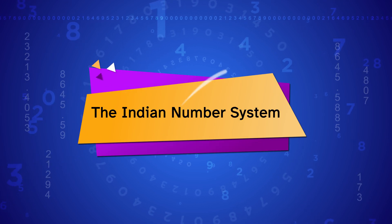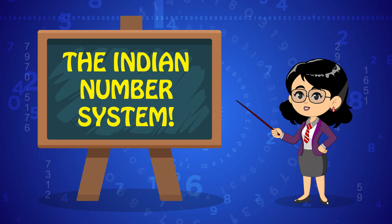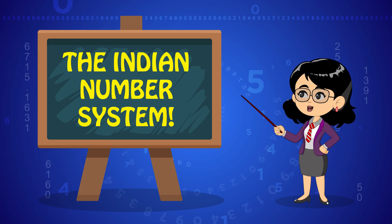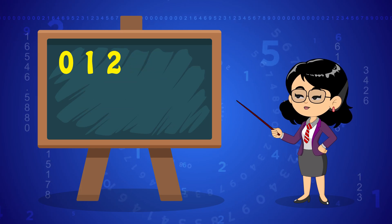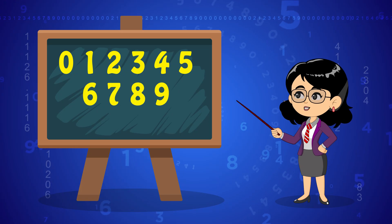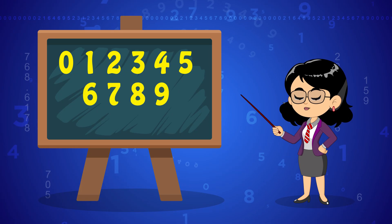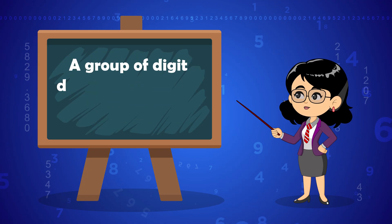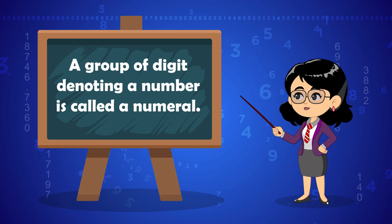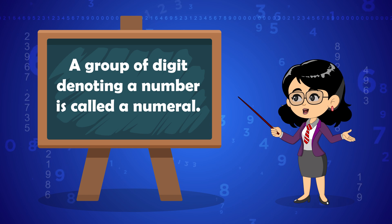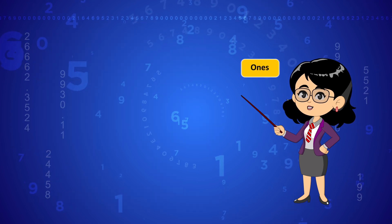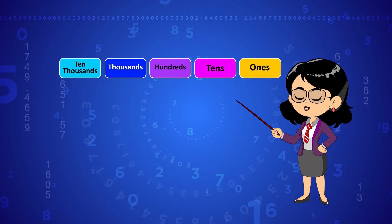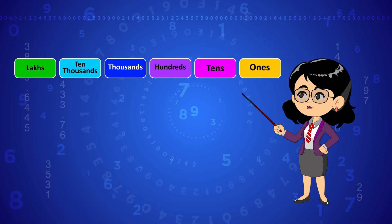Now let's talk about the Indian Number System. This is the number system we use every day. It uses ten digits — zero, one, two, three, four, five, six, seven, eight, and nine — to represent any number, called a digit or figure. A group of digits denoting a number is called a numeral. For a given numeral, we start from the extreme right: ones, tens, hundreds, thousands, ten thousands, lakhs, and so on.